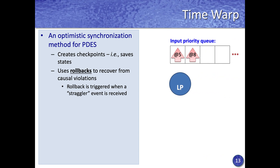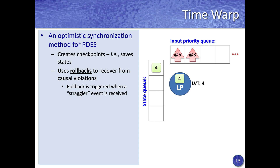Each logical process has an input priority queue that maintains events to be processed, and maintains its local virtual time indicating the simulation time up to which it has processed events. In addition, each logical process maintains a state queue and an output queue. The state queue maintains checkpoints of the states, while the output queue maintains copies of events sent to other logical processes.